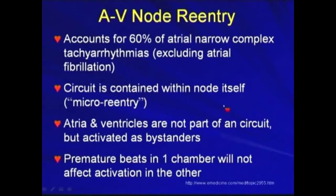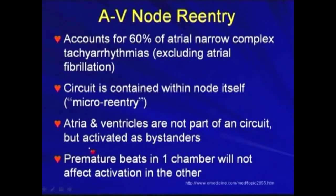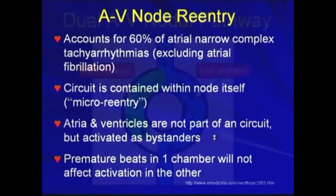The circuit is contained within the node itself, making this a micro reentry. The atria and ventricles are not part of the circuit but are activated as bystanders only. Therefore, premature beats in one chamber will not affect activation in the other.